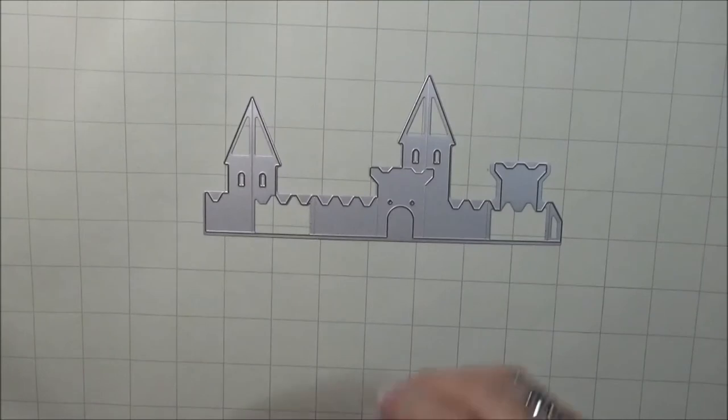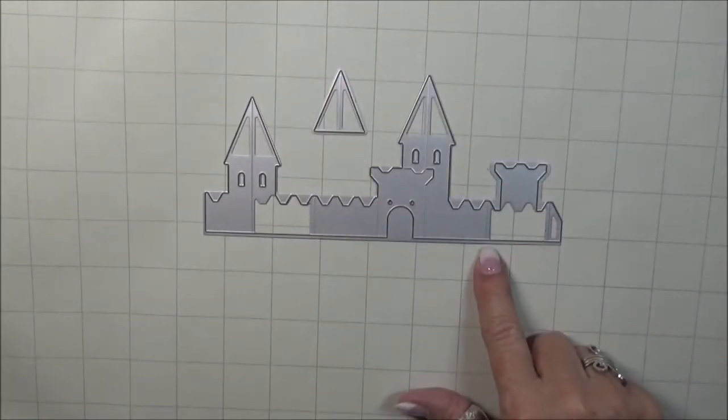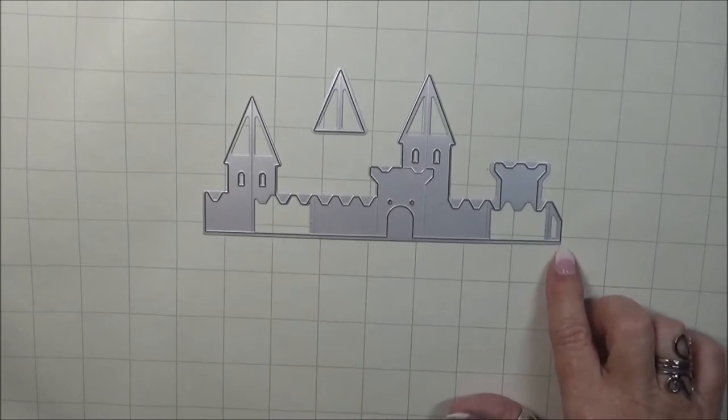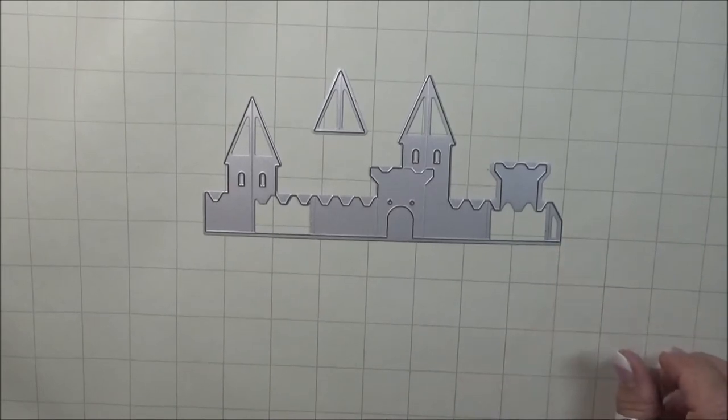This is the castle portion of the die set along with the roof. The die provides crease lines which are important for the placement in the fold of the card later on. We also have the tab to join the sections together. I'm going to go cut this out.